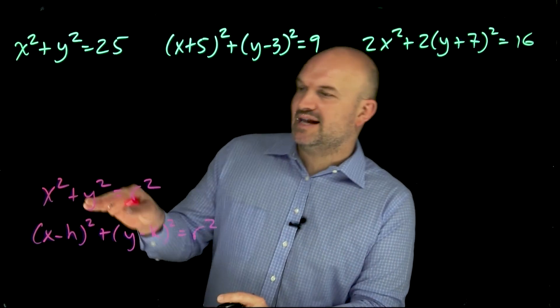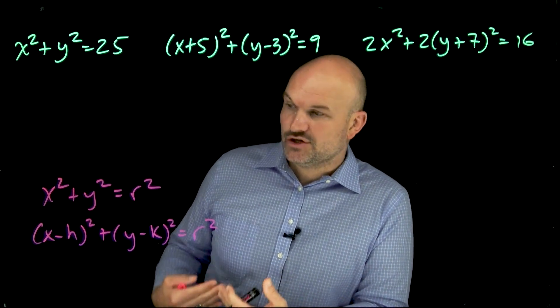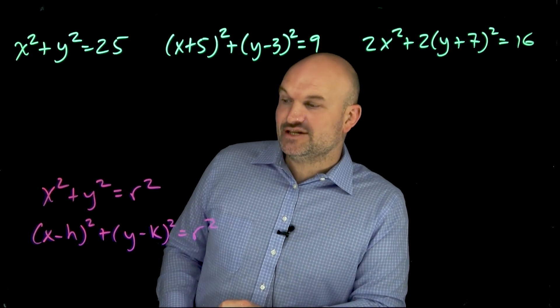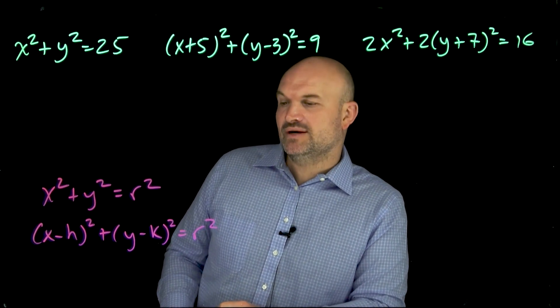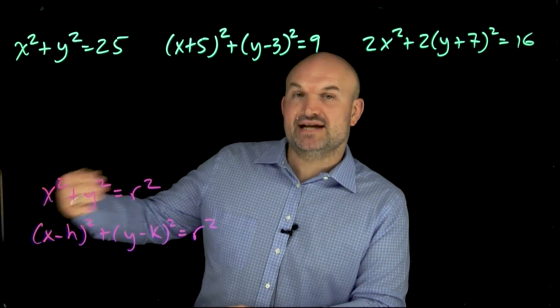Okay, so the two equations that I have is x squared plus y squared equals r squared. Now, this is going to be when we have a circle with a center at the origin. And here we have x minus h quantity squared plus y minus k quantity squared equals r squared. And this is going to be when we have a circle with a center outside of the origin.